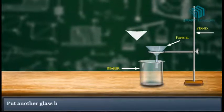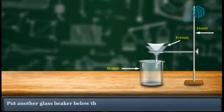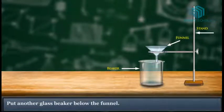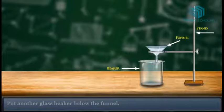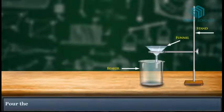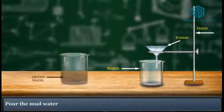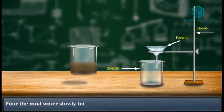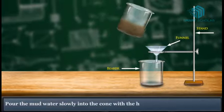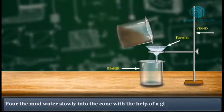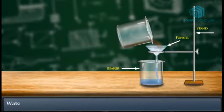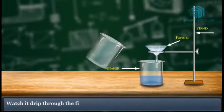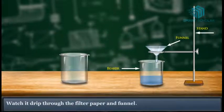Put another glass beaker below the funnel. Pour the mud water slowly into the cone with the help of a glass rod. Watch it drip through the filter paper and funnel.